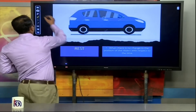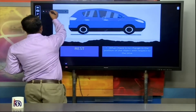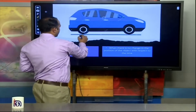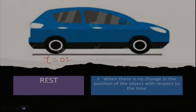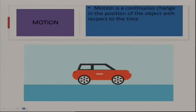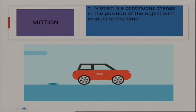Suppose at time t equal to 0 seconds, and after 5 seconds at t equal to 5 seconds, here is a car at t equal to 0, and after some time — that is t equal to 5 seconds — its position has changed with respect to the road or the surrounding.